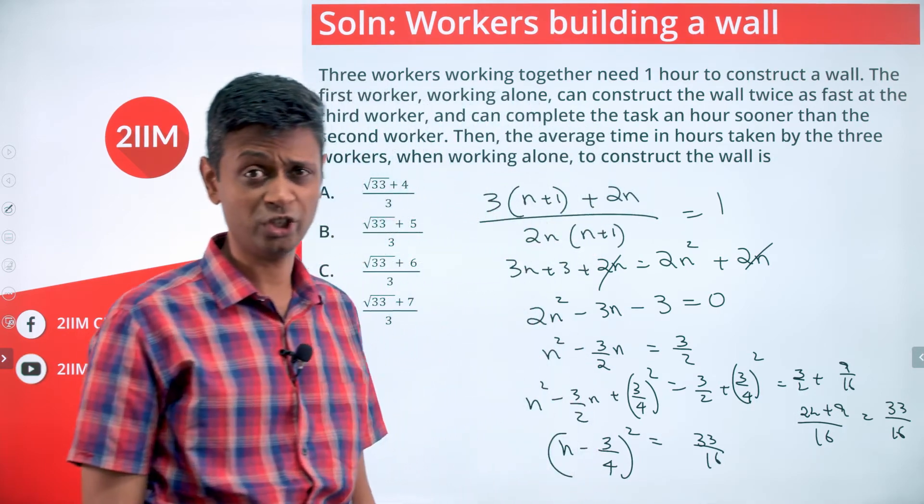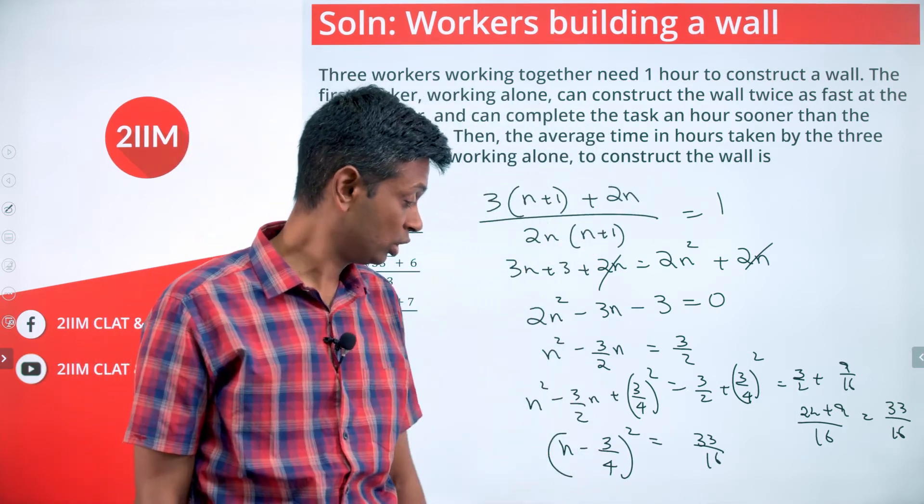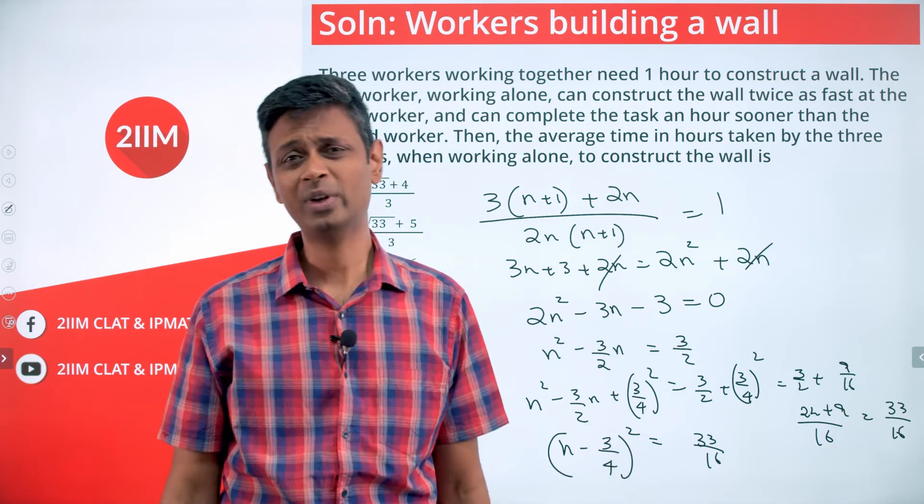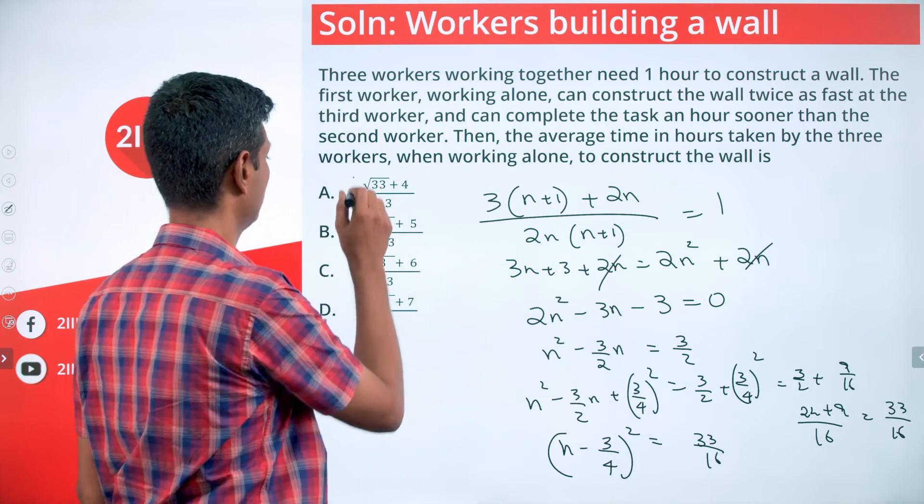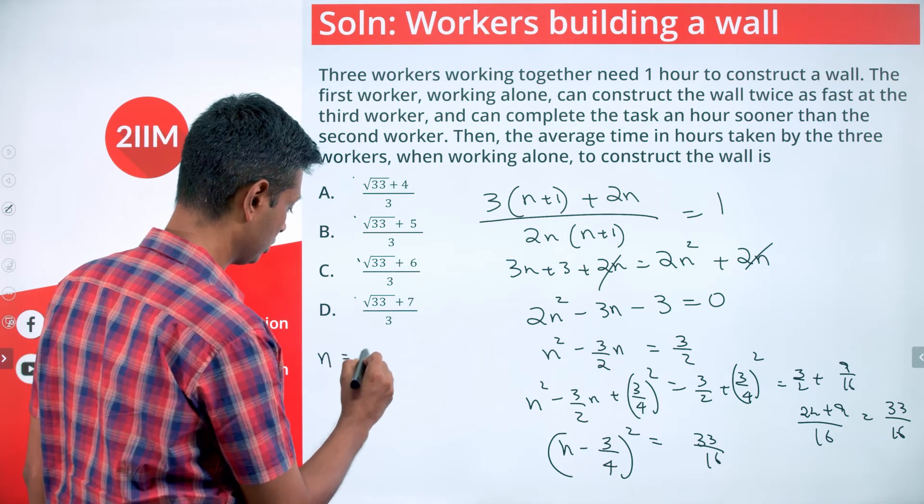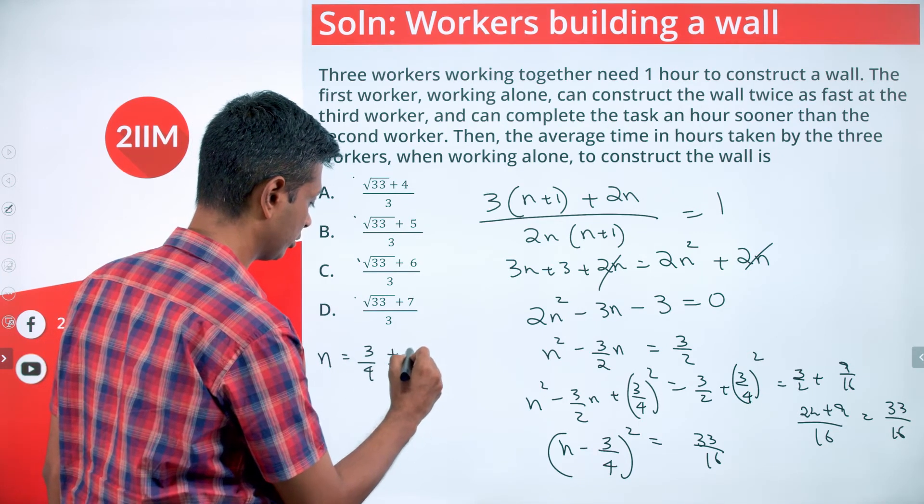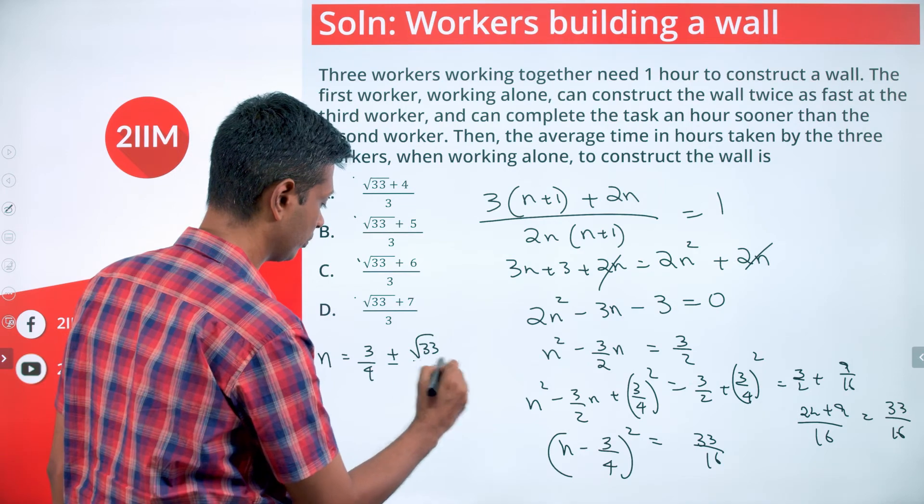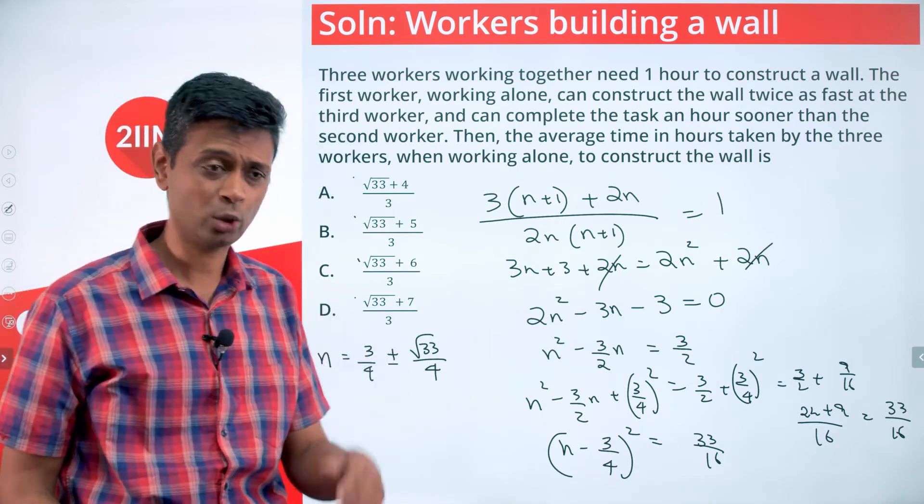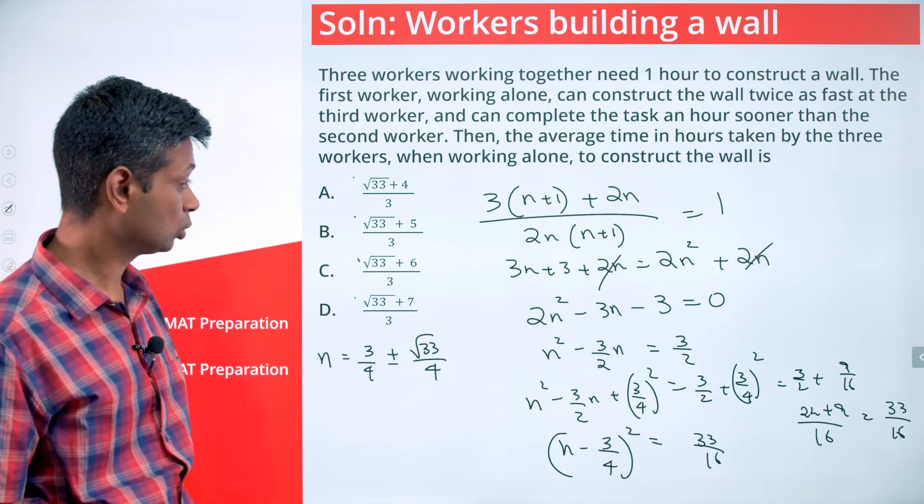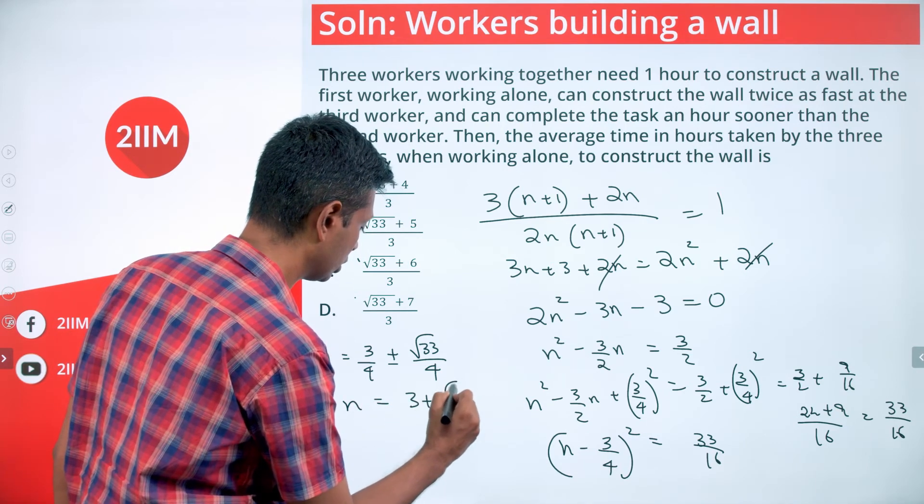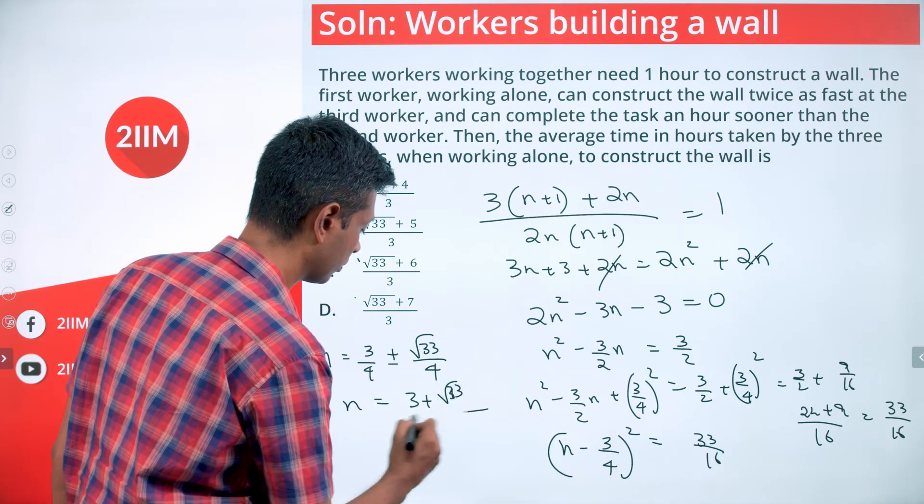(n - 3/4)^2 = 33/16. Lovely. I like 33/16. You know why? Because this means n - 3/4 is going to be plus or minus √33/4. So n equals 3/4 ± √33/4. Straight away, it cannot be minus and n will become negative. This is (3 + √33)/4.